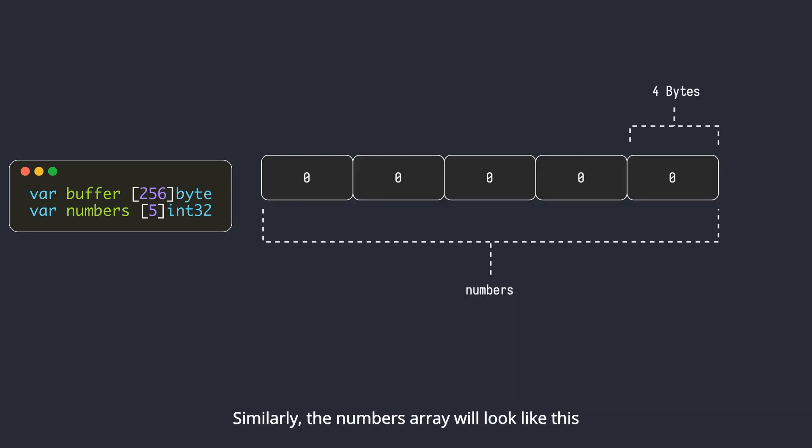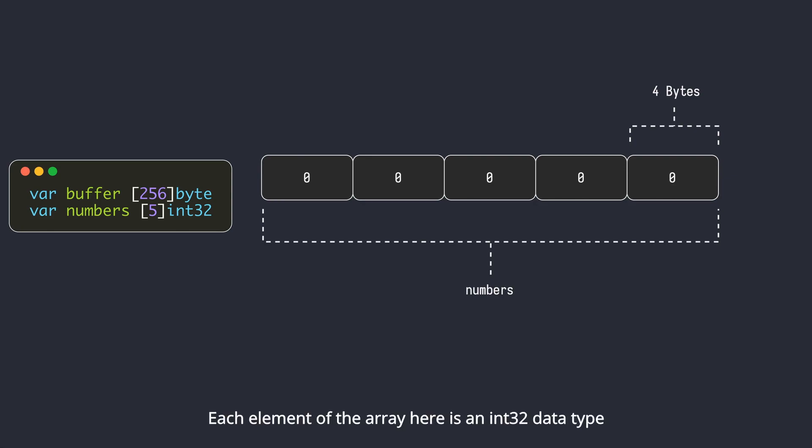Similarly, the numbers array will look like this. Each element of the array here is an int32 data type, and an int32 data type requires 4 bytes.